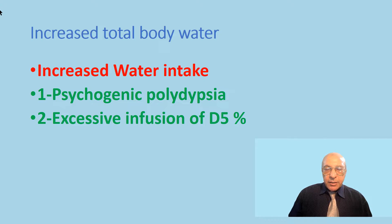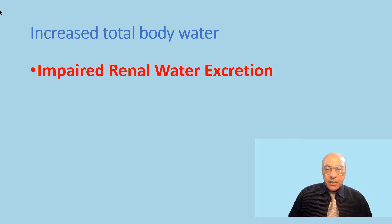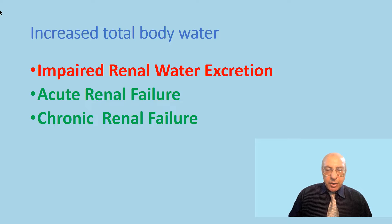The last group of causes is due to decreased secretion of water through the kidney in cases of acute and chronic renal failure. These are the causes and the mechanism of hyponatremia.